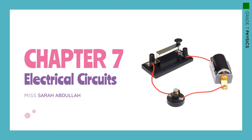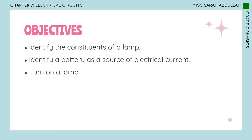Hello, grade 7. This week we are starting with a completely new concept: chapter 7, electrical circuits. We're starting with electricity. The objectives we're going to cover during this week's lecture are: you will be able to identify the constituents of a lamp, identify a battery as a source of electrical current, and turn on a lamp. Let's start.